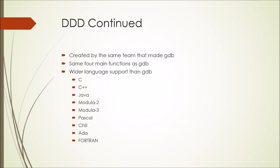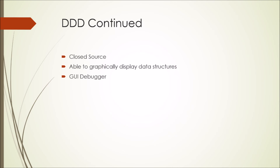DDD was created by the same GNU Linux team that created GDB, which means it has the same four main functions. However, the main difference — other than its graphical user interface — is that it has a much larger support of languages than GDB, including C, C++, Java, Modula 2, Modula 3, Pascal, Chill, Ada, and Fortran, as well as others. Like GDB, DDD is a closed source debugger, meaning the community is not able to easily create their own additions. However, its ability to create graphical images of data structures is what sets it apart and makes it special. This is my example of a GUI debugger, as the other two were both console IO.